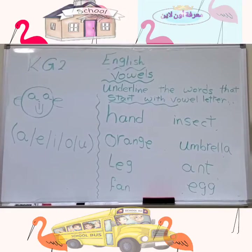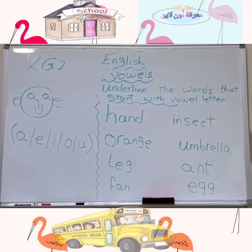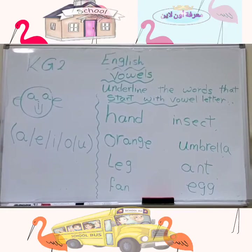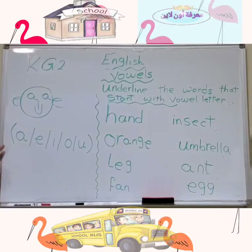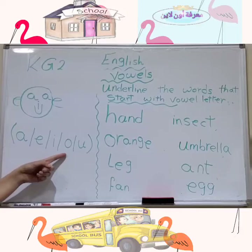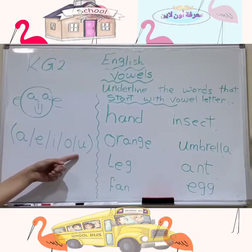Welcome everybody to our first English lesson for KG. Let's get to know about vowels. What are vowels? We have five vowels: letter A, E, I, O, and U.